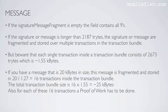Be aware that each single transaction inside the transaction bundle consists of 2,673 trits. If you have a message that is 20 KB in size, this message is fragmented and stored in 20 divided by 1.27 equals 16 transactions inside the transaction bundle. The total transaction bundle size is 16 times 1.55 equals approximately 25 KB. Also for each of these 16 transactions a proof of work has to be done.